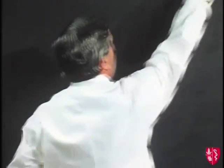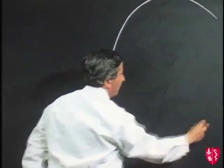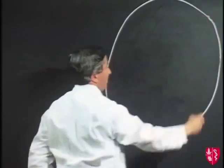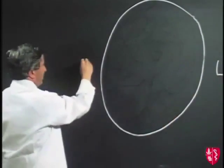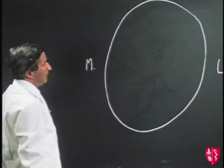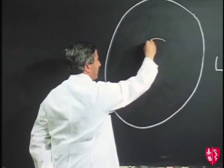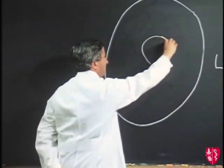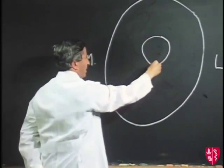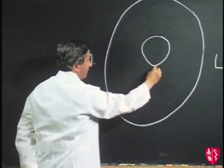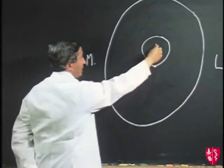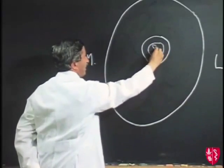Having built up the femoral triangle on the front of the thigh, I think it's a good idea to look at a cross-section of the thigh. If we indicate the skin of the thigh passing round onto the lateral side, making this the lateral side and this the medial side, and then indicate in the center the shaft of the femur coming round posteriorly to a ridge known as the linea aspera, and then indicating the bone marrow across the middle of the shaft.